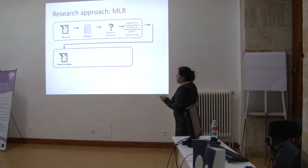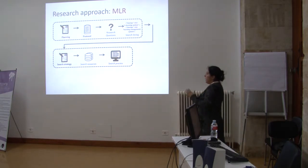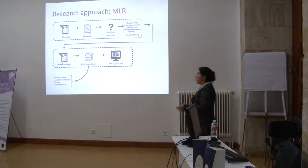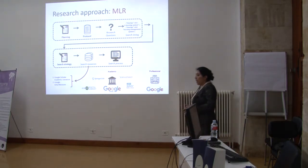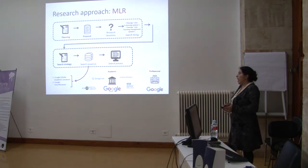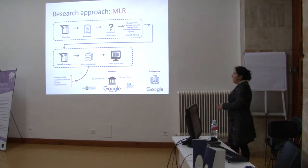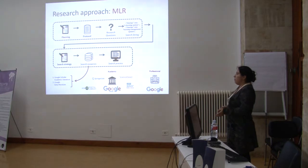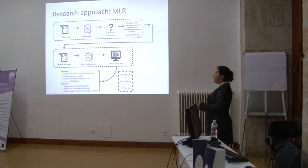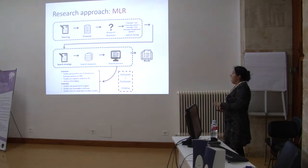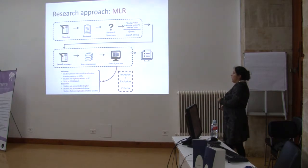Regarding the research strategy, it includes two components: search resources and search process. For search resources, we include two databases — Google and Google Scholar — because both of them cover all major publishing venues. In the search process, we defined the inclusion and exclusion criteria, and finally, we conducted a structured data analysis.